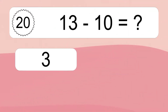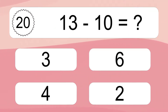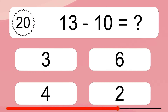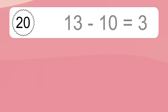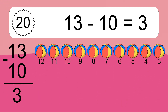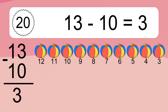13 minus 10 equals what? 13 minus 10 equals 3. Let's count it: 12, 11, 10, 9, 8, 7, 6, 5, 4, 3.